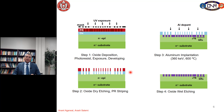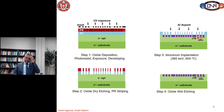We can then easily strip the photoresist using oxygen plasma or acetone, and now our silicon dioxide mask is ready for ion implantation. For P+ regions, we normally use aluminum implantation to form the guard rings and P+ active area regions. After implantation, we remove the oxide mask using wet oxide etching such as buffered HF.